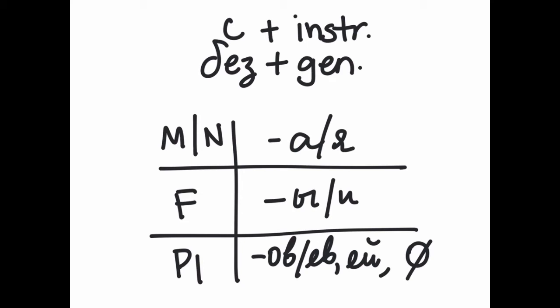Reminder of your genitive endings here. These are nouns. Masculine and neuter, а, я, feminine, уй, и, plural, we could have оф, еф, ей, or the zero ending.